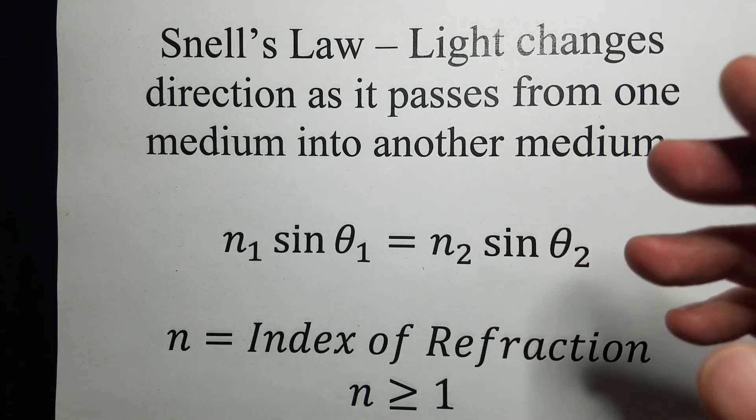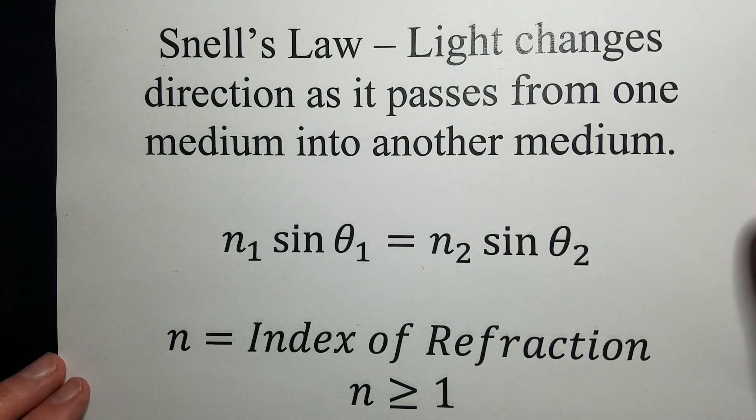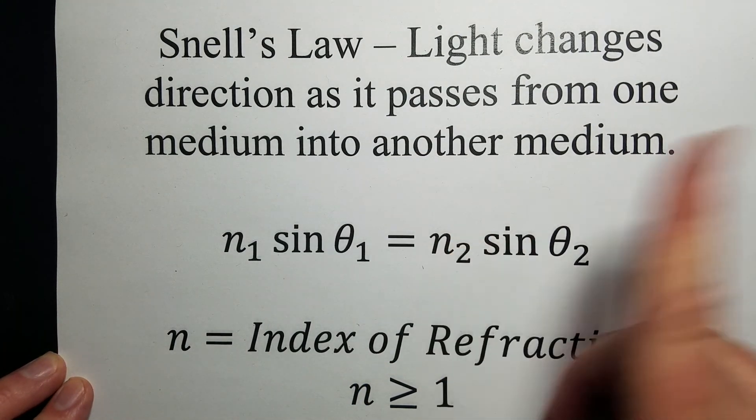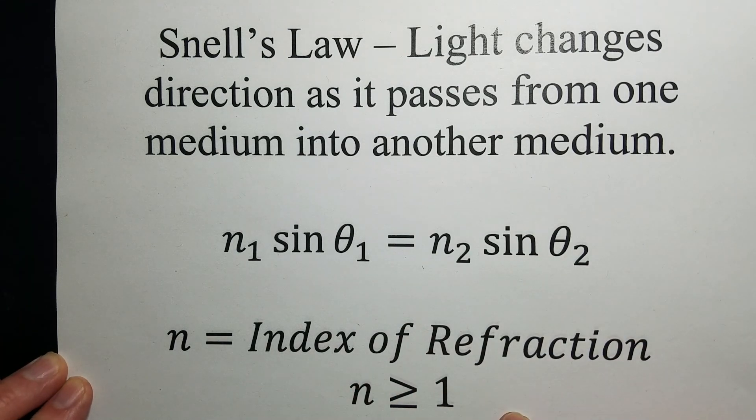Now, we're not going to worry about the slowing down part right now. We want to figure out the index of refraction of our clear plastic. An index of refraction is a number in physics that gives a measure of the optical density of the material.